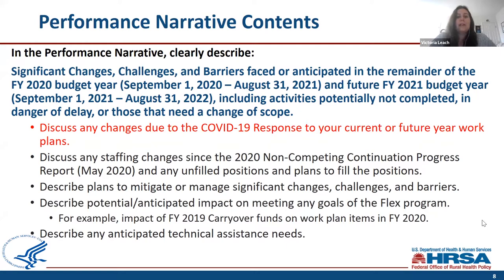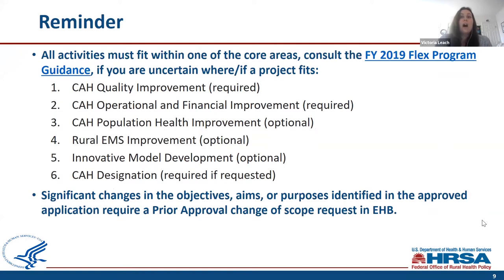Describe plans to mitigate or manage significant changes, challenges, and barriers, and describe any potential impact on meeting Flex program goals. For example, this could include the impact of FY19 carryover funds on work plan items in FY2020. Please describe any anticipated technical assistance needs. As a reminder, all Flex project activities must fit within one of the core areas. You can consult the FY2019 Competitive Flex program guidance if uncertain. It must fit within one of the six program areas: quality improvement, operational financial improvement, population health improvement, rural EMS improvement, innovative model development, and critical access hospital designation. Significant changes in objectives must go through the prior approval change of scope process in EHB.